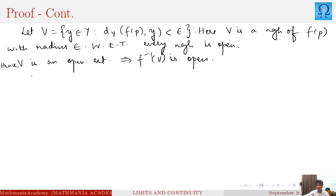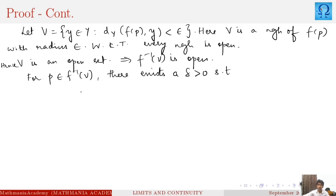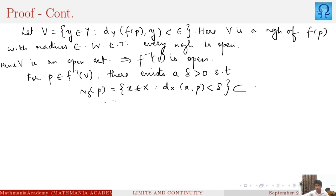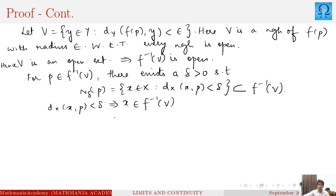Since f inverse of V is open by our assumption, all points of f inverse of V are interior points. For a point p in f inverse of V we have f(p) is a member of V. Since p is an interior point, there exists a positive delta such that the neighborhood of p with radius delta — collecting all x in X with d_X(x, p) less than delta — is completely contained in f inverse of V. So all such x are members of f inverse of V, implying f(x) is a member of V.